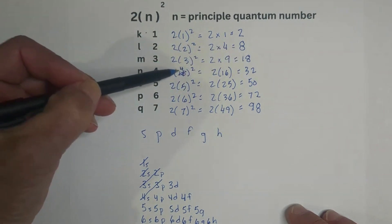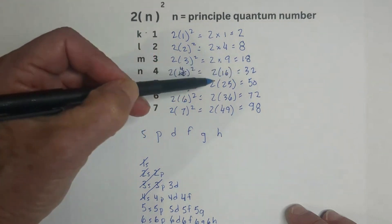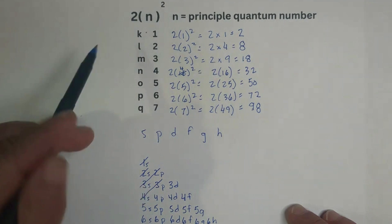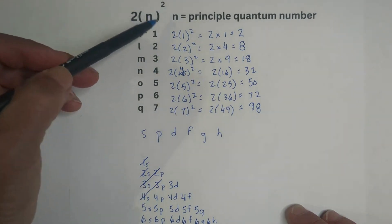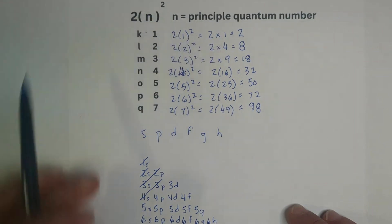This one, oops, I kind of messed up. Four squared is 16. It's 32, and you can see the pattern here. So this formula, two times n squared, will help you know how many electrons in each shell.